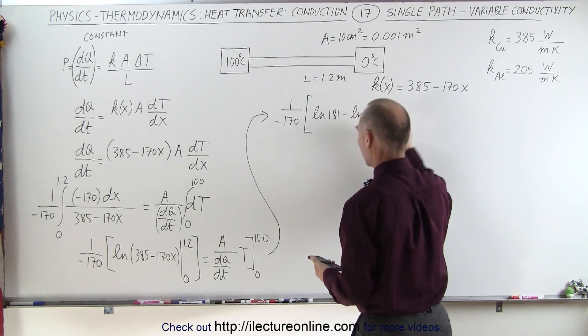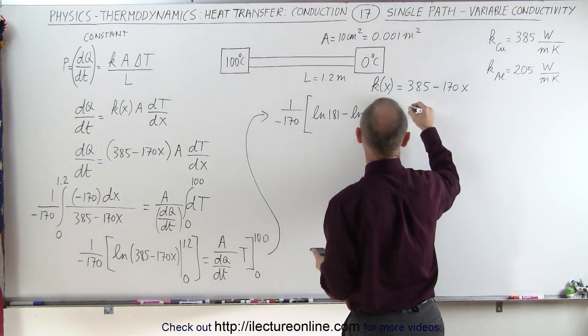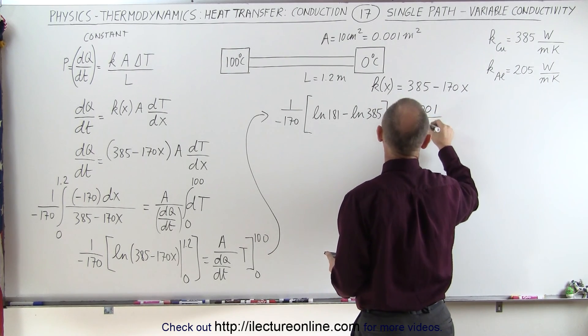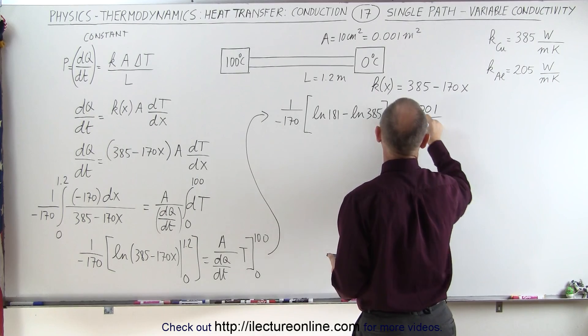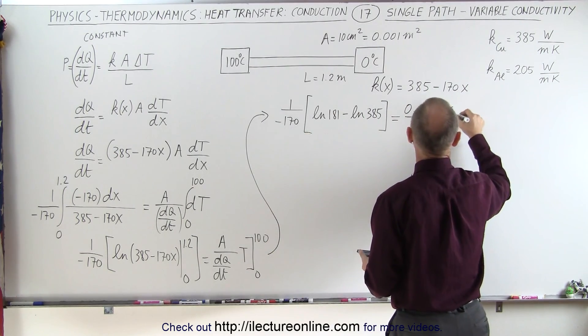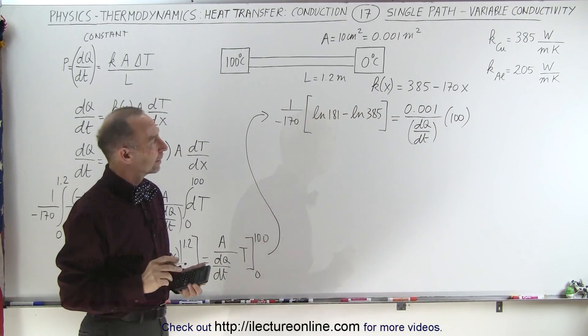And on the right side, well, the cross-sectional area here is 0.001 divided by dQ/dt, which is what we're looking for, times, when we plug in the limits, we get 100.